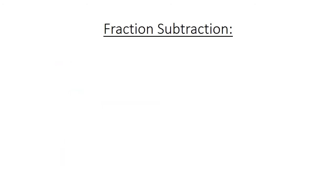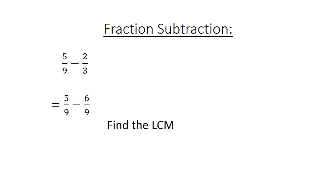Fraction subtraction: 5 over 9 minus 2 over 3. Find the lowest common multiple: 9. So 5 over 9 minus 6 over 9 equals negative 1 over 9.